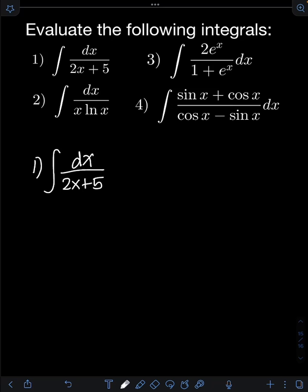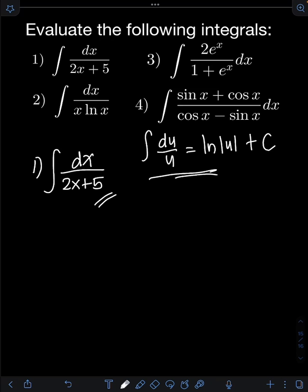We have here an integral yielding a natural logarithm. We will use the formula: the integral of du over u is equal to ln of the absolute value of u plus C. Before we can apply this formula to our given integral, let's do a substitution first. We let u be equal to the denominator, 2x plus 5.